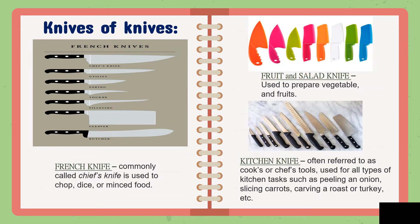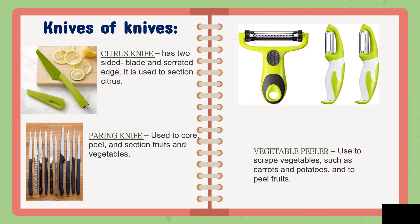For knives and types of knives: number one is the big kinds of knives — the French knife, commonly called a chef's knife. Then the fruit and salad knife, and the kitchen knife. Next is the citrus knife and paring knife, and the last is the vegetable peeler.